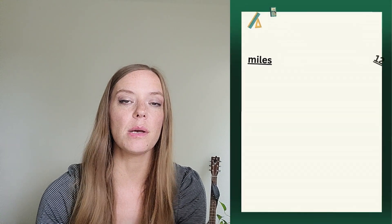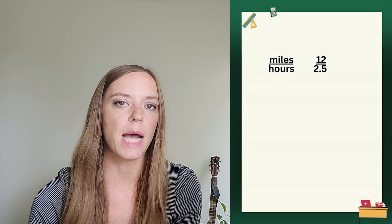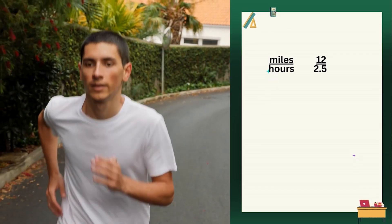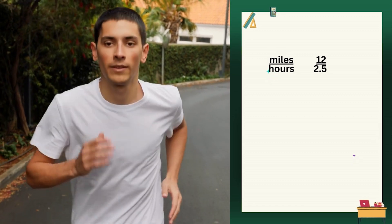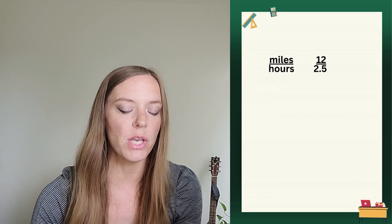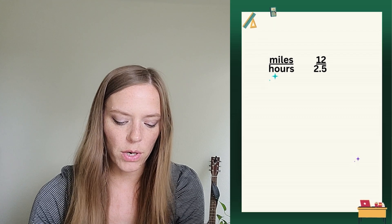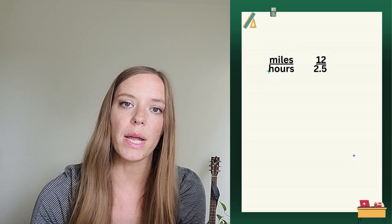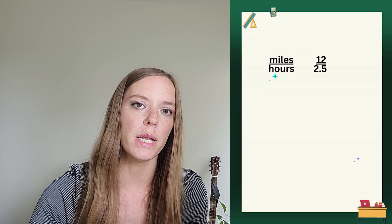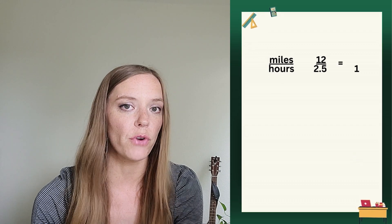All right, here's my next example. Here's someone else's running stats. So they ran 12 miles in 2.5 hours. So notice how in my example, I was counting the minutes. In this example, we're giving you hours as the time. And so we need to kind of think about that as we go. We want to know, if we want the unit rate, we want one hour.